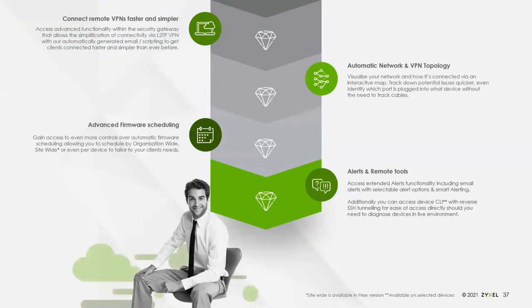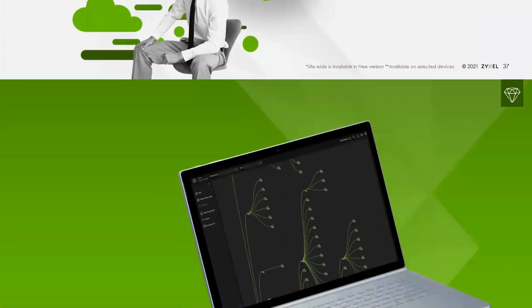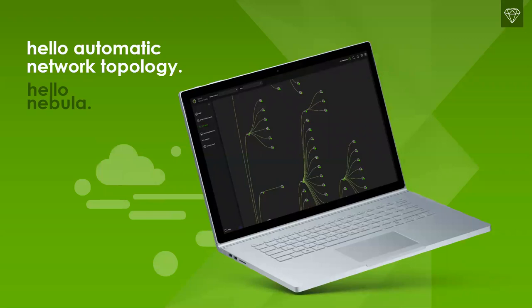On the VPN side of things, Pro Pack makes it easier for remote users to VPN back into the central gateway. We have the ability to send out a script via email to users that they simply run, and it will configure VPN for them — that works on Windows, Mac, and iOS. There are also more advanced settings when it comes to VPN topology and various alerts. The automatic network topology feature automatically maps out every device on the network and shows what it's connected to, to help you with troubleshooting.